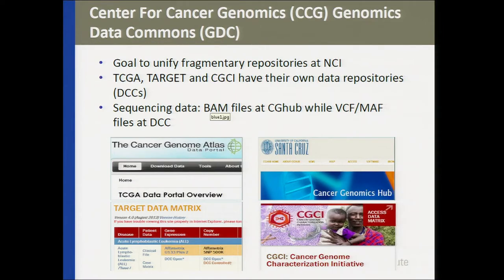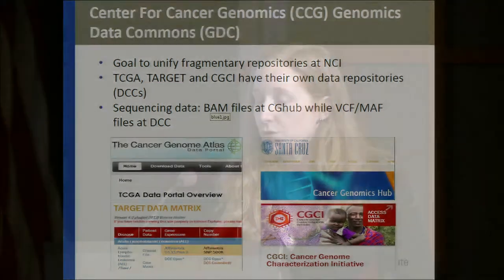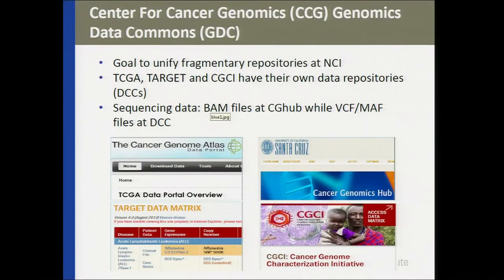The Center for Cancer Genomics, the CCG, has three major projects in cancer genomics: TCGA, TARGET, which is the Childhood Cancer Genomics Project, and the CGCI, Cancer Genome Characterization Initiative.